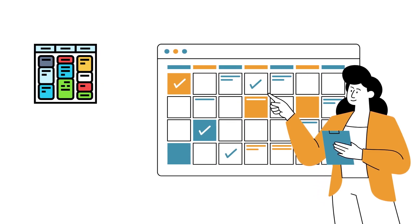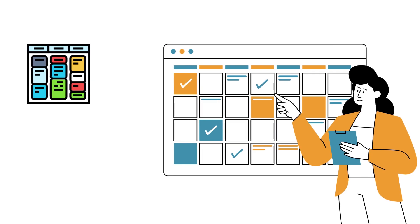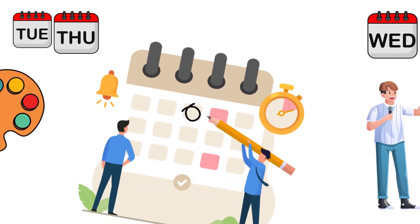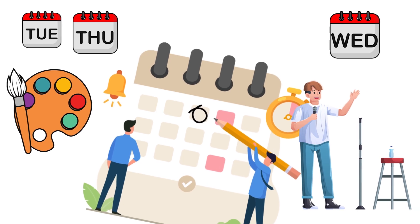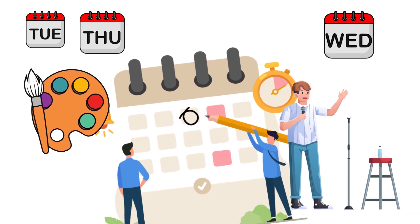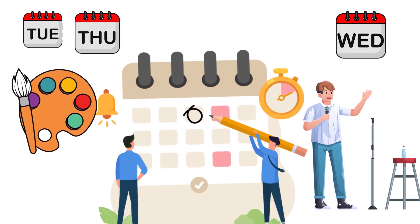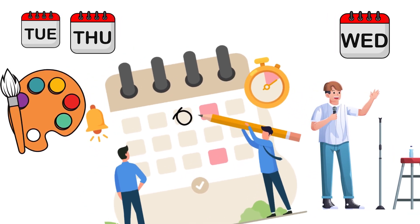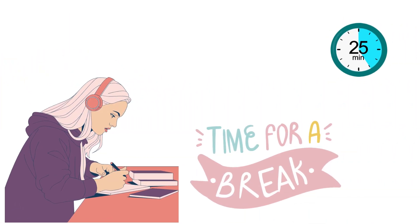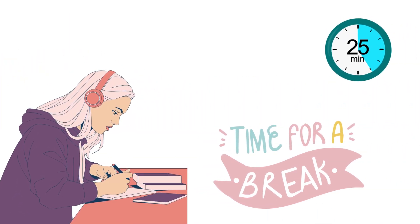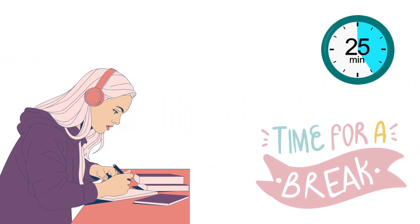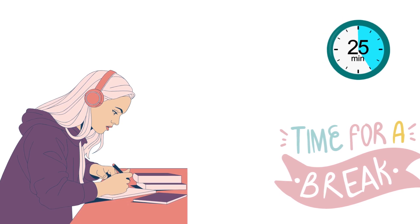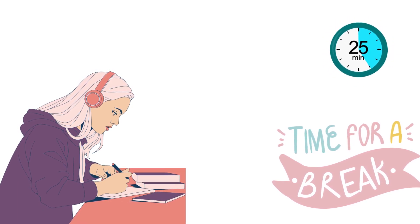1. Time blocking. Dedicate specific chunks of time to each interest. Maybe Tuesdays and Thursdays are for painting, while Wednesday evenings are reserved for your budding stand-up comedy career. 2. The Pomodoro Technique. Work in focused 25-minute bursts, then take a 5-minute break. It's amazing what you can accomplish in these short sprints.